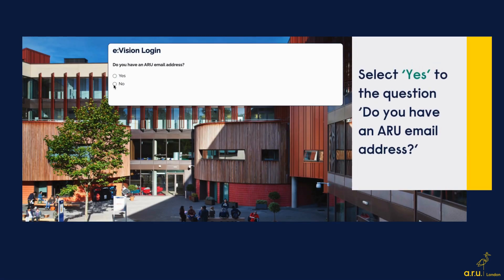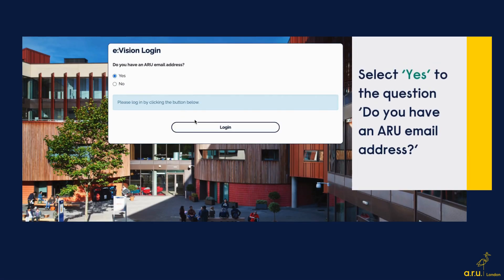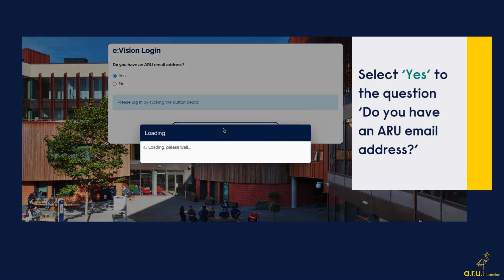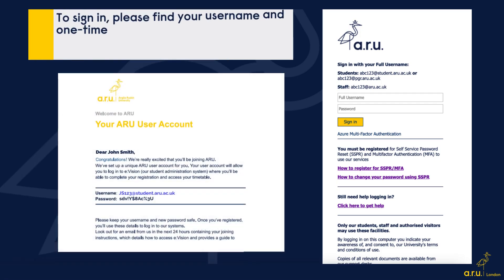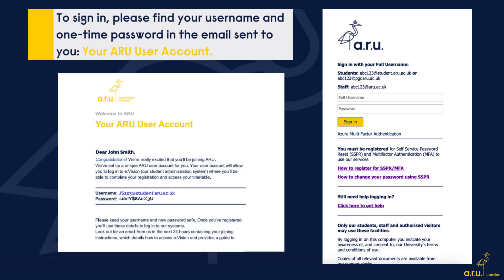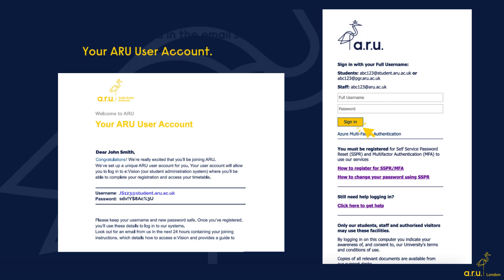When you reach the eVision login page, you will be asked if you have an ARU email address. Select yes and then press login. To sign in, please find your username and one-time password in the email sent to you entitled your ARU user account. When you find these details, enter them in the boxes on the right-hand side and then press sign in.